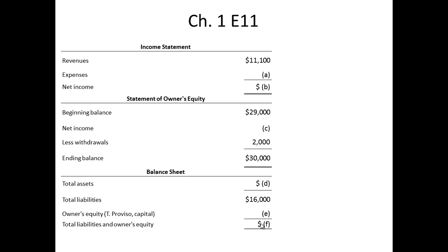We have here a series of amounts on the various financial statements, and we have to solve for A through F. The first letter we can solve for is C. The statement of owner's equity equation is: beginning balance plus net income, less withdrawals, equals ending balance. We can use that equation to solve for C.